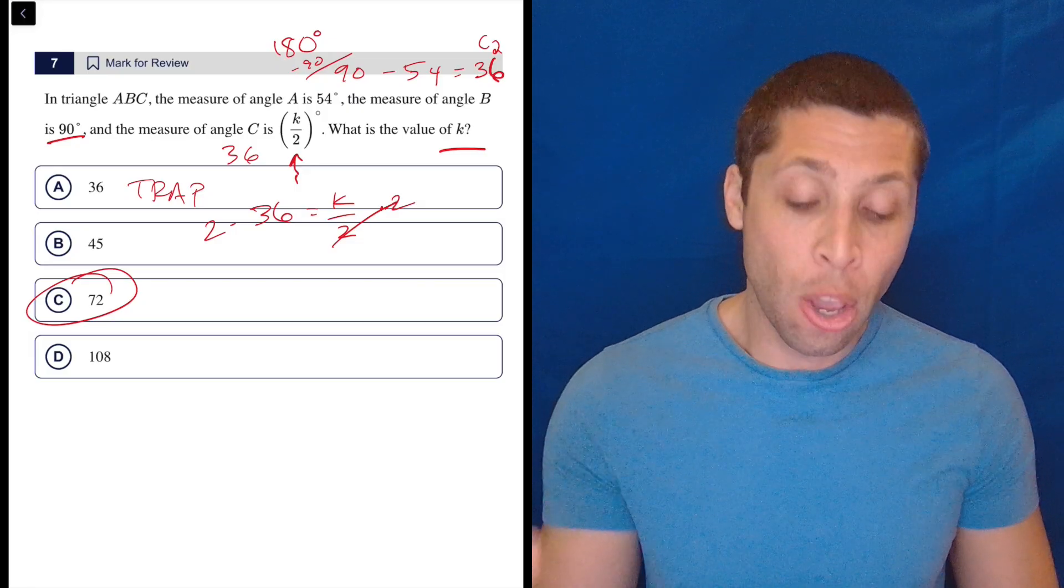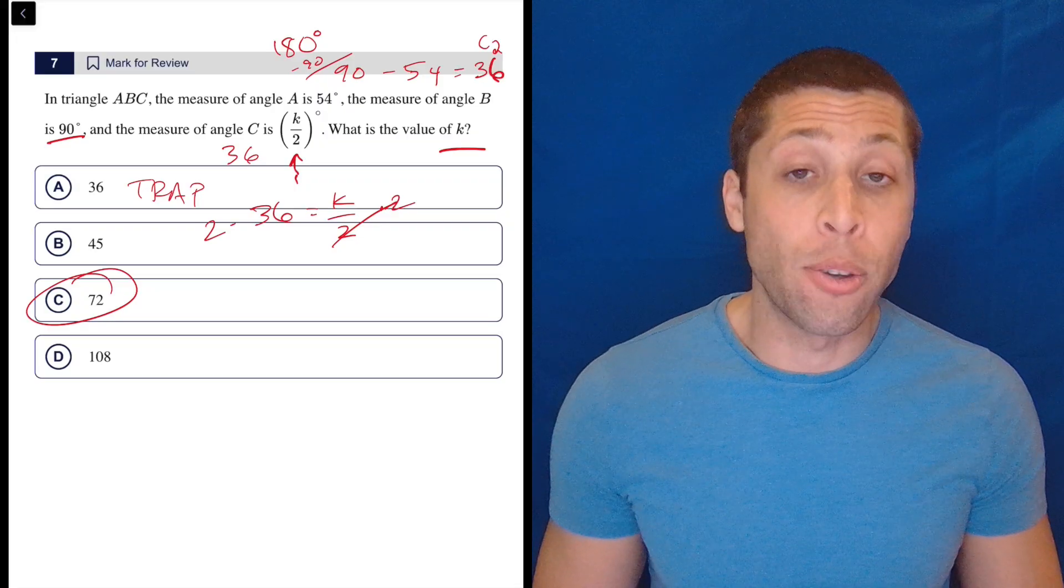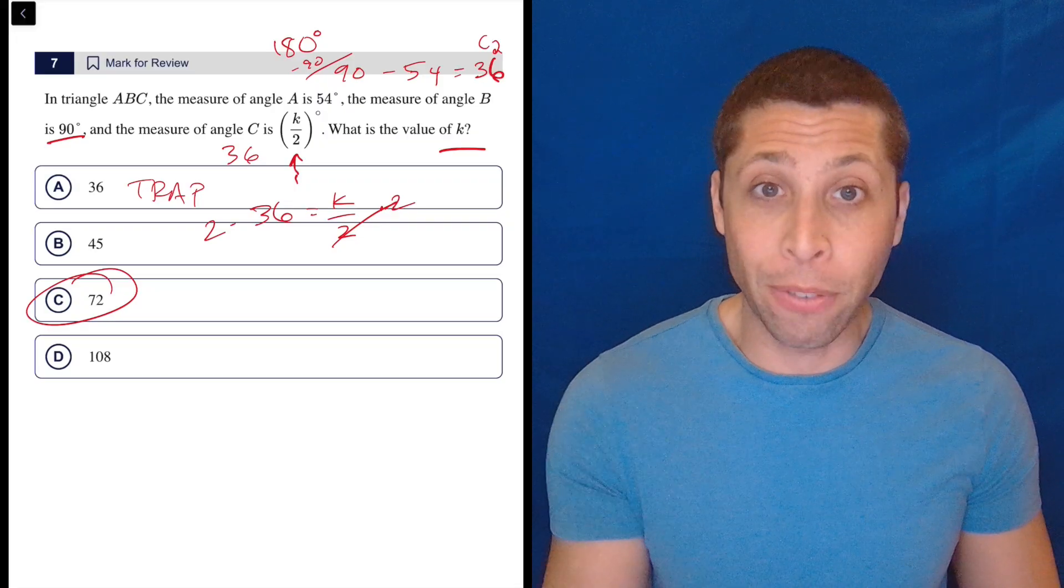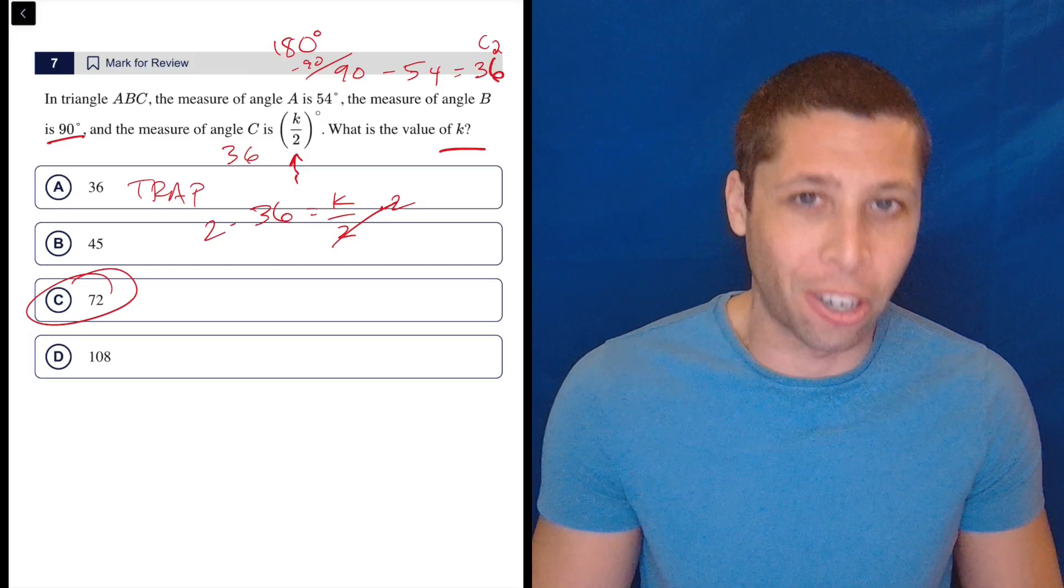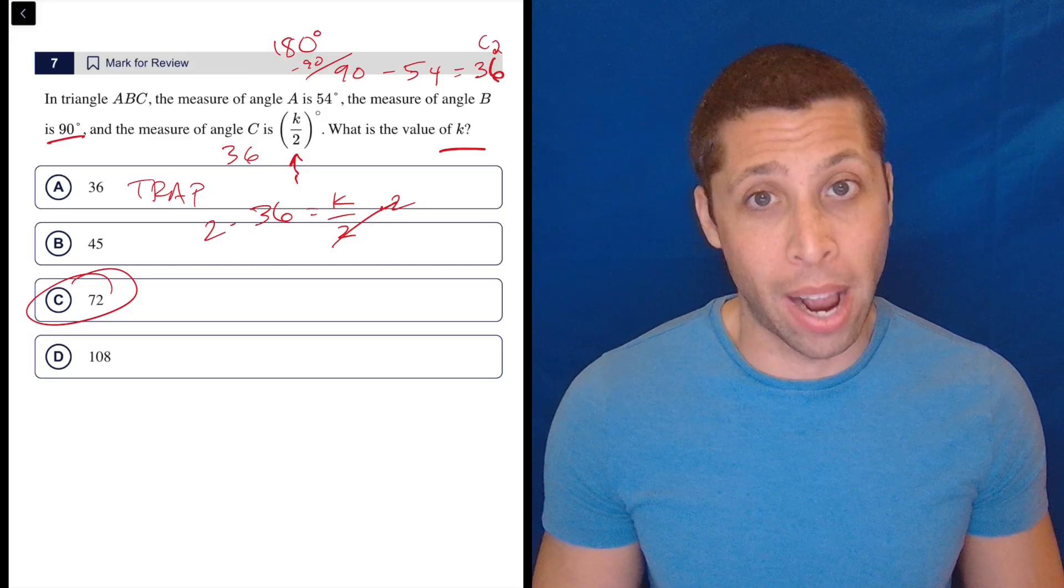You have to be thinking about traps. You have to notice when they're doing stuff like this. And you have to make sure that you fight your instinct to just get that first answer that feels like the answer, that mission accomplished answer. You got to read the question and give them exactly what they're asking for.